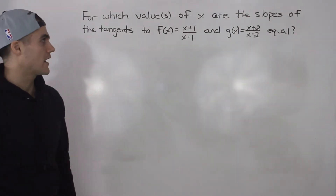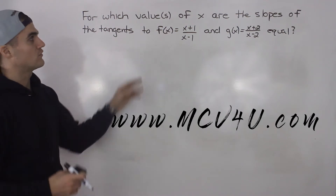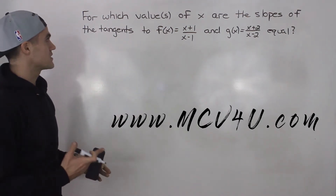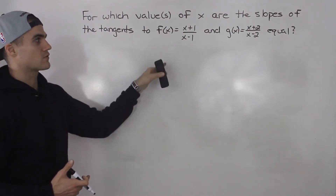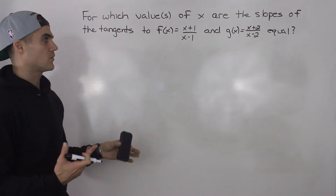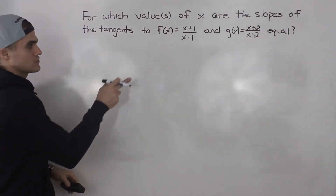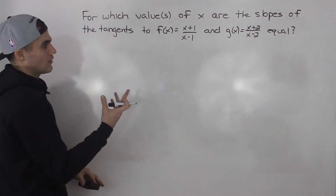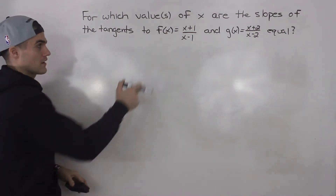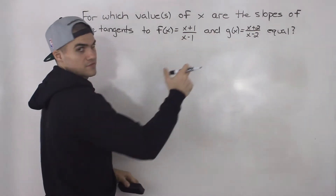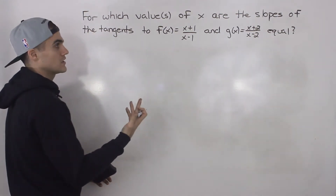Welcome back. Moving on to the next question: for which value or values of x are the slopes of the tangents to f(x) = (x+1)/(x-1) and g(x) = (x+2)/(x-2) equal? Another way to word that is: what values of x make the derivatives of these two functions equal, because the derivatives represent the slopes of the tangent lines.